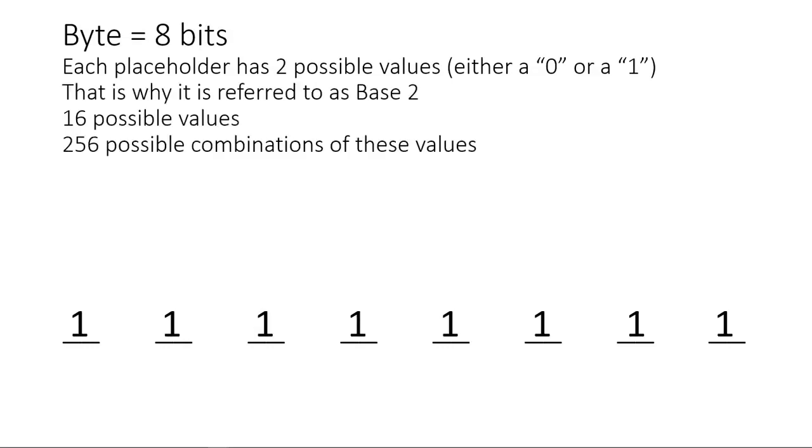So the total of all of these is 16 possible values across eight placeholders. 256 possible combinations of these values. Because there's two possible values, that's why it's referred to as base two.